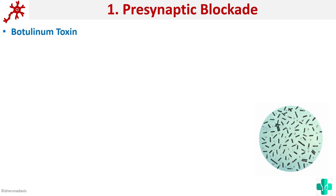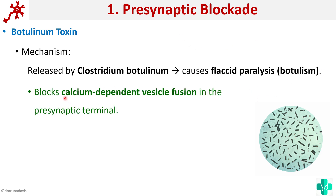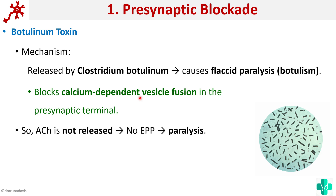The next drug that acts on the presynaptic neuron is botulinum toxin. This is a toxin released by a bacterium called Clostridium botulinum. Clostridium botulinum produces a toxin called botulinum toxin which can cause flaccid paralysis. It blocks calcium-dependent vesicle fusion in the presynaptic terminal, so it will not allow the release of acetylcholine. For release of acetylcholine from the vesicles, the vesicle must fuse with the presynaptic membrane — that does not occur, so acetylcholine is not released, leading to no end plate potential and paralysis.